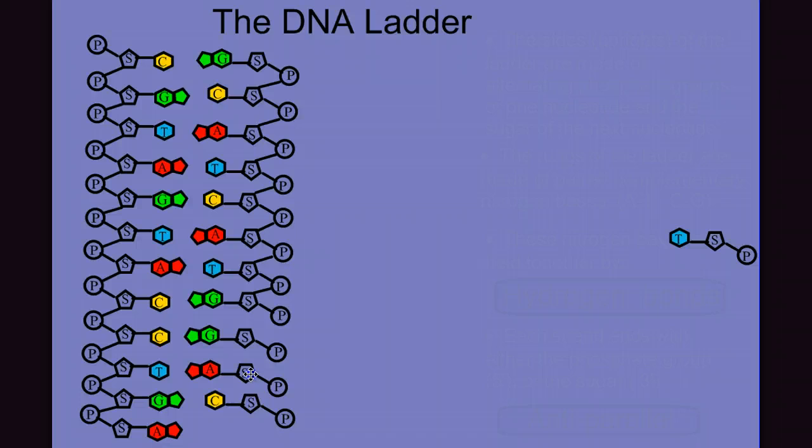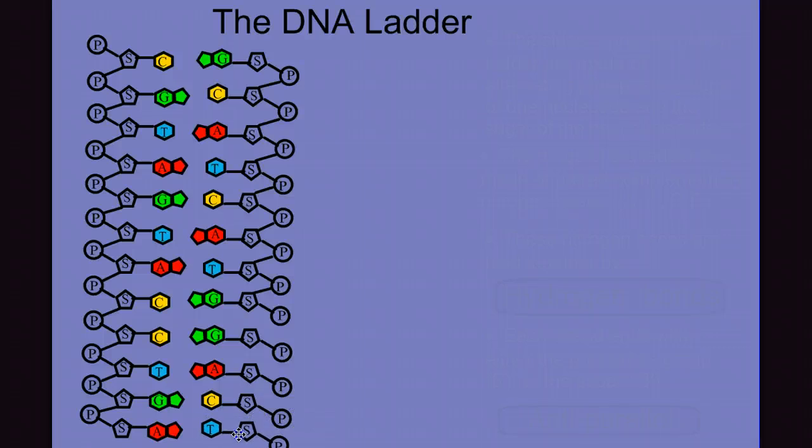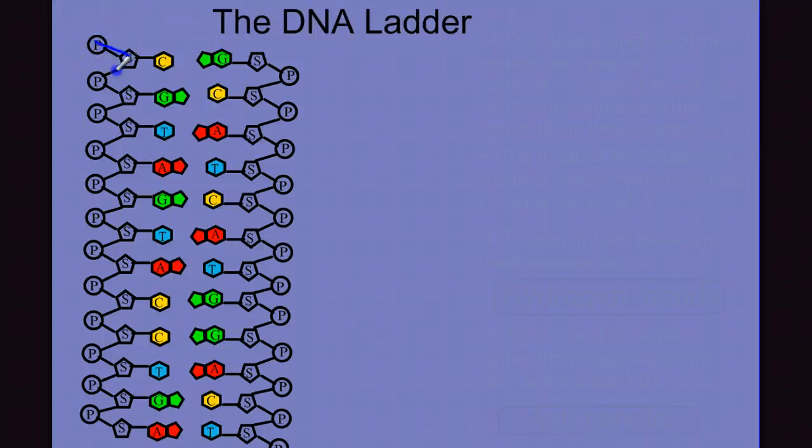I'm going to keep moving these in and building this other strand. And hopefully you can see that while we didn't care about the order going down, the across is very important. We have to be very particular about what we put across because we have these complementary pairs. And now we're starting to see our ladder a little more clearly. We have our uprights of our ladder being alternating phosphate, sugar, phosphate, sugar, and we can start to see the rungs of our ladder.